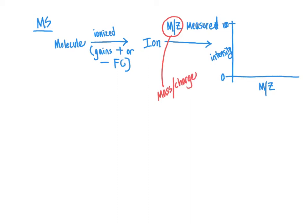It is essential that the compound be ionized, because otherwise the charge would be 0, and any number over 0 is not going to give a measurable value. In the mass spectrum, you will see signals that look like spikes corresponding to the various mass-to-charge ratios measured, shown here on an axis from 0 to 500.